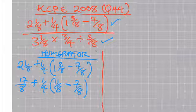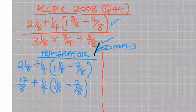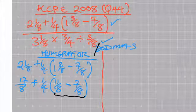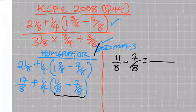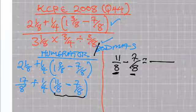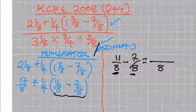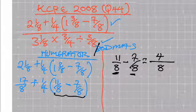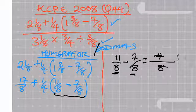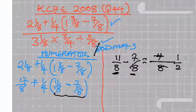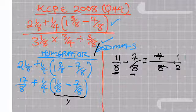You are then allowed to work what is within the bracket. Remember, the rule of BODMAS still applies. What is within the bracket is 11 over 8 minus 7 over 8. Since the denominators are the same, just use one denominator and subtract the numerators: 11 minus 7 gives you 4. So that gives you 4 over 8, which simplifies — 4 goes into 8 twice — so you get one half.